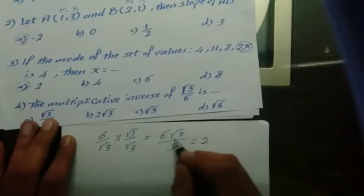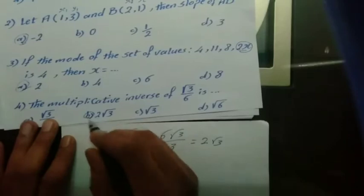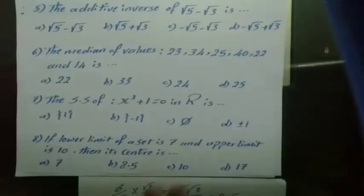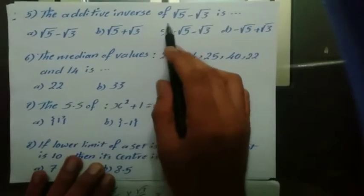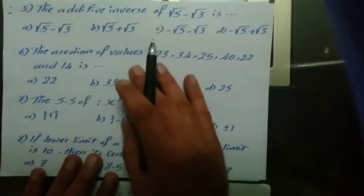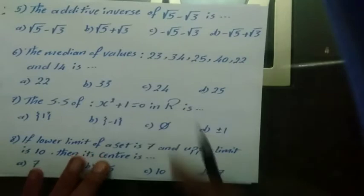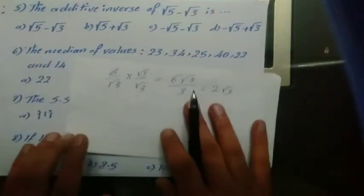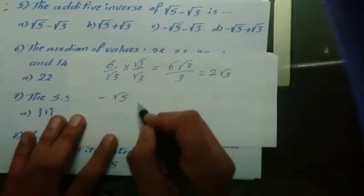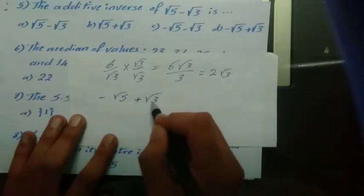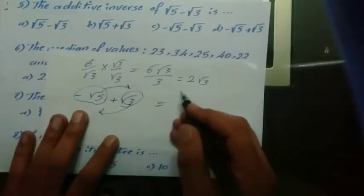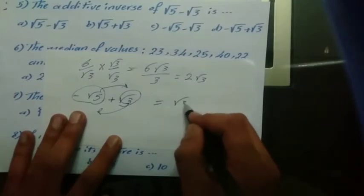The additive inverse of square root of 5 minus square root of 3 is found by changing the sign of each term. Root 5 becomes negative root 5 and negative root 3 becomes plus root 3. By the commutative property, this can be written as root 3 minus root 5.